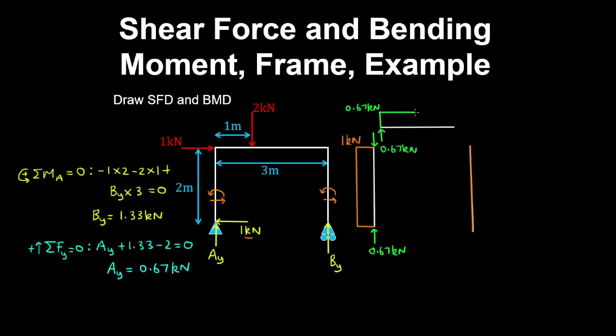And then after the 2kN load, the shear force is constant. And the 2kN load causes a jump in the shear force downwards. So therefore 0.67 minus 2 is minus 1.33kN. And the shear force is constant thereafter.